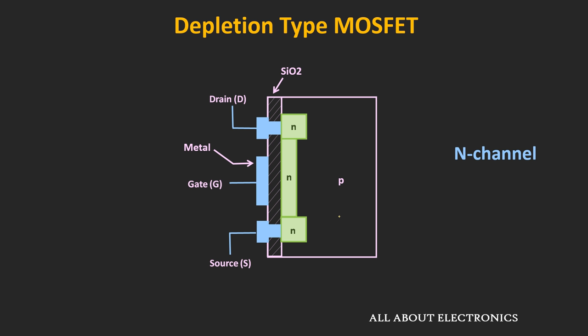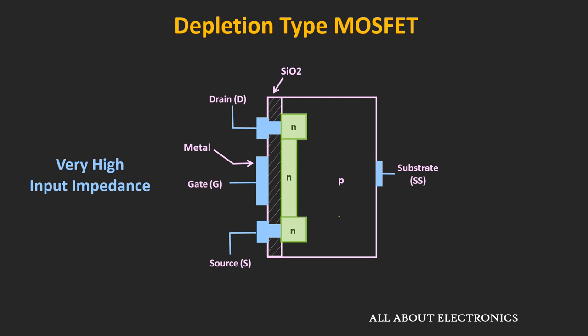Due to this insulating layer, there will not be any flow of current through the gate terminal. Or we can say that the input impedance of the gate terminal is very high — in fact, even higher than the JFETs. That is why these MOSFETs are used in applications where minimum power consumption is required.